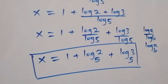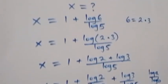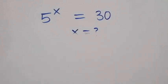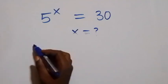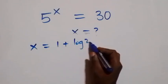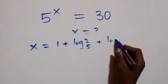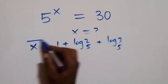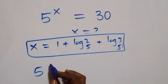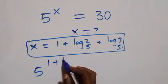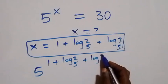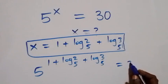Then let's check if this will satisfy the given problem. From what we have here, we substitute the value of x, which is x equals to 1 plus log₅2 plus log₅3. Then what we have here becomes 5 raised to power (1 plus log₅2 plus log₅3) is equal to 30.